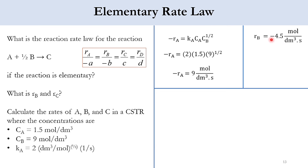The negative sign appears for rB because B is a reactant — it disappears in this irreversible reaction, as we also saw in chapter 1. For rC, since rC/1 = -rA/1, we get rC = rA, so rC = 9 mol per cubic decimeter per second. That is one example of elementary rate law solved in the system.